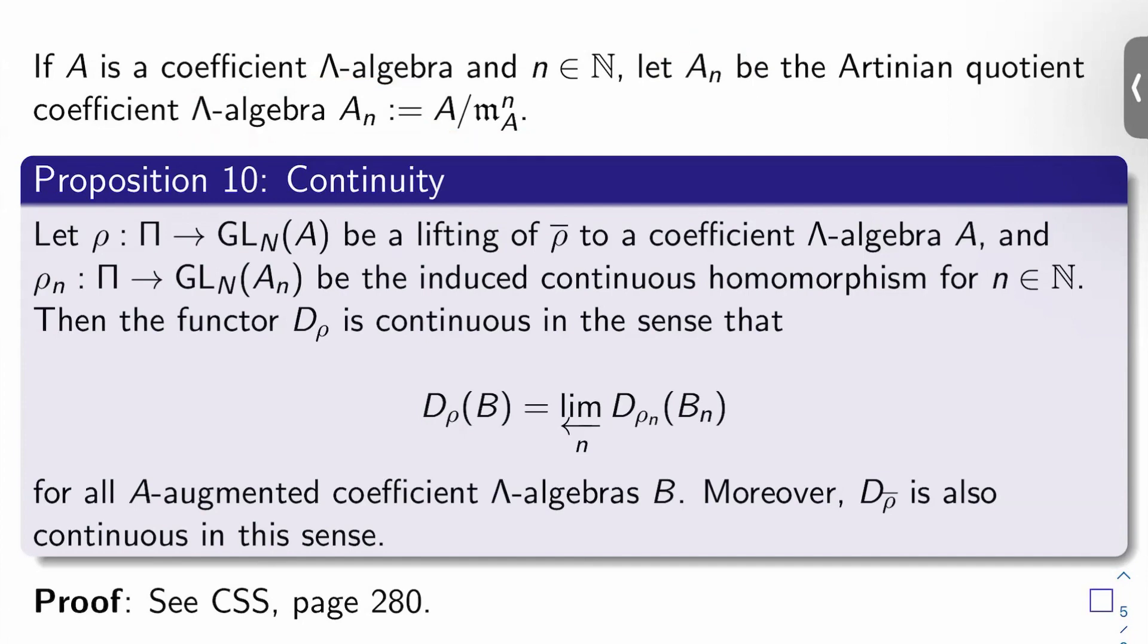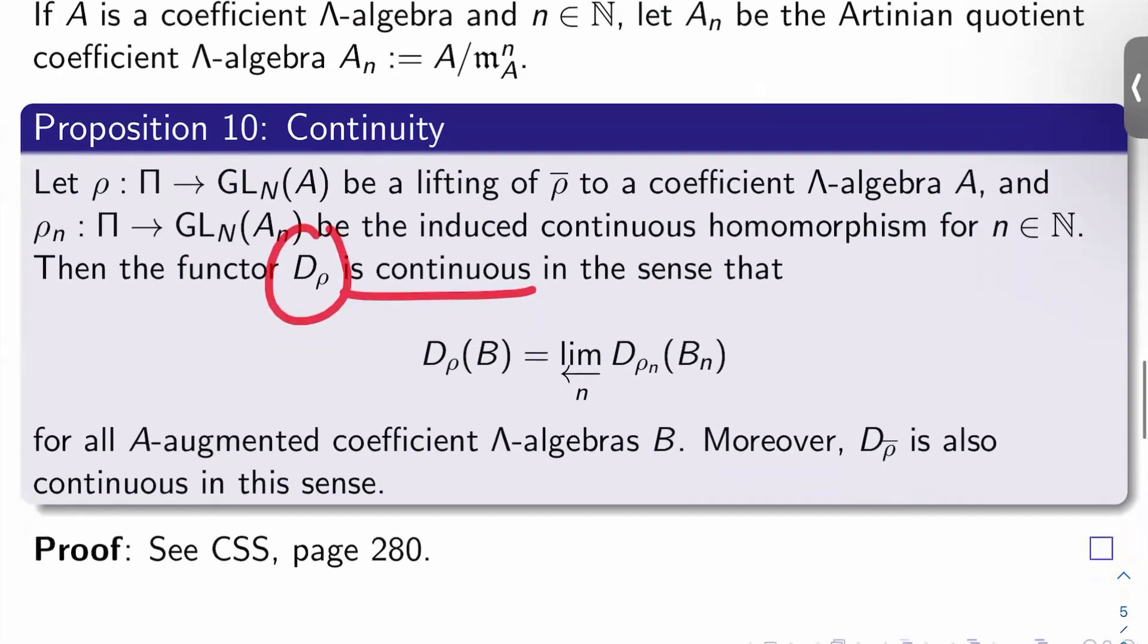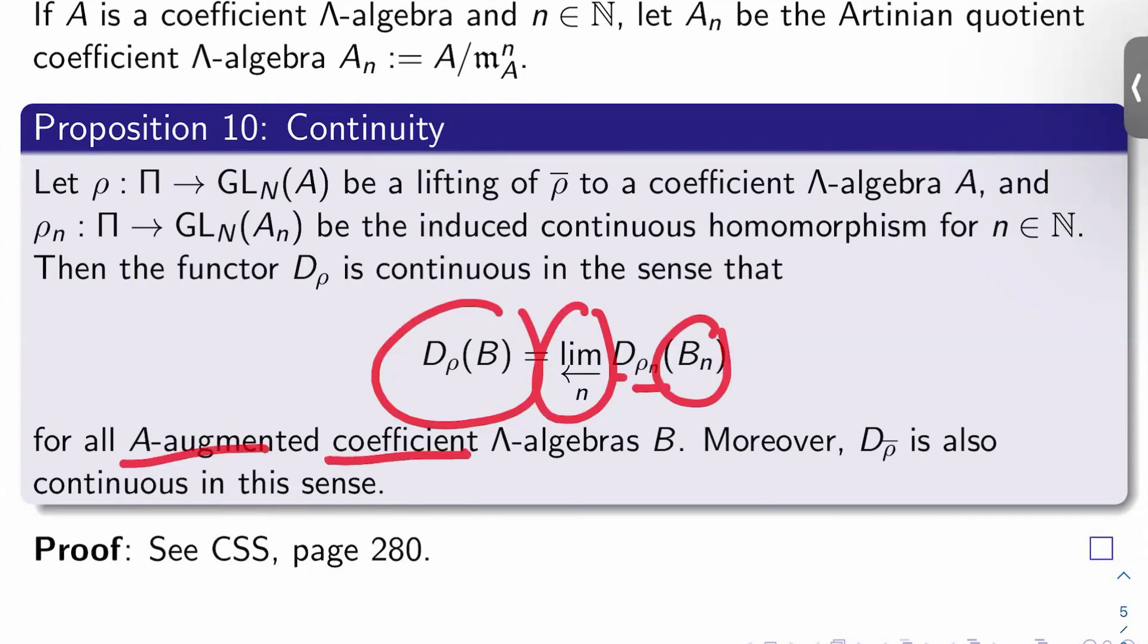So proposition 10, we do have continuity here. Let rho from pi to GLN of A be a lifting of rho bar to a coefficient lambda algebra A, and let rho sub N from pi to GLN of A sub N be the induced continuous homomorphism for each natural number N. Then the functor D sub rho is continuous in the sense that we defined in a previous video, meaning D sub rho of B is the inverse limit over N of the D sub rho sub N's of B sub N's for all A augmented coefficient lambda algebra B.